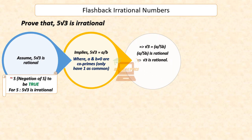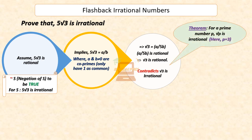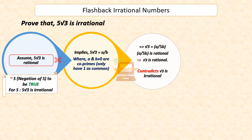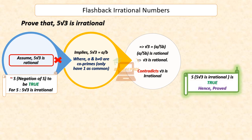Since 5, A and B are integers, we get A by (5 times B) is rational, and hence square root of 3 is rational. But this contradicts the fact that square root of 3 is irrational, since we already know that the square root of a prime number is always irrational. Hence, our assumption that 5 root 3 is rational is incorrect. So, we can conclude that 5 root 3 is irrational.